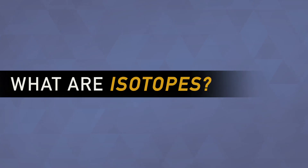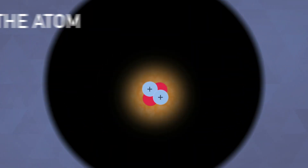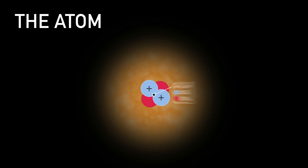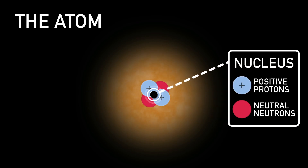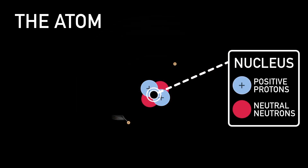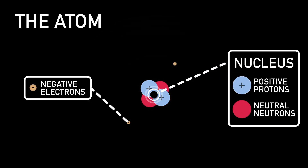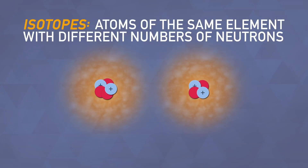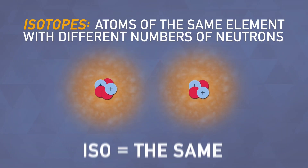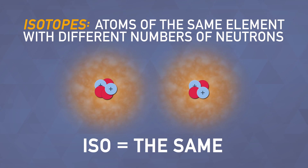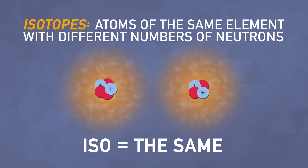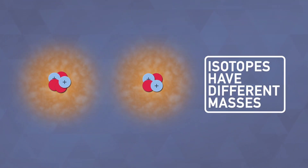So, you've heard about isotopes, but what exactly are they? You probably know that atoms have a dense nucleus made up of positively charged protons and neutral neutrons, and that the nucleus is surrounded by a bunch of negatively charged electrons. Isotopes are atoms of the same element, meaning they have the same number of protons and electrons, but that have different numbers of neutrons. The differing numbers of neutrons give isotopes different masses.